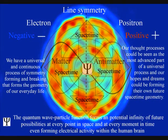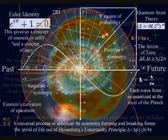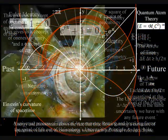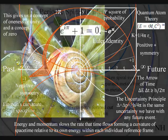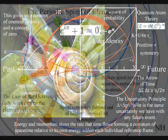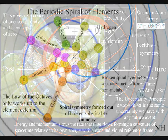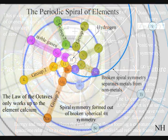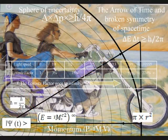This process is totally universal and interactive, from the largest object to the smallest creature. Right down to the smallest element of the periodic table will slow the rate that time flows, forming a curvature of space-time relative to its own energy or mass.